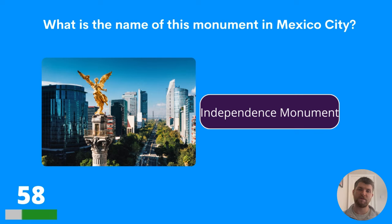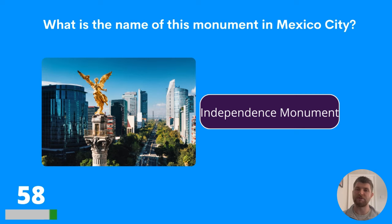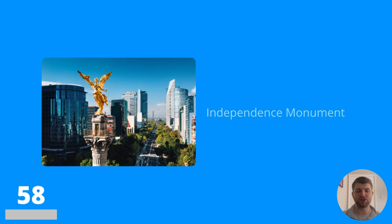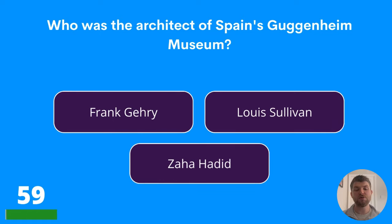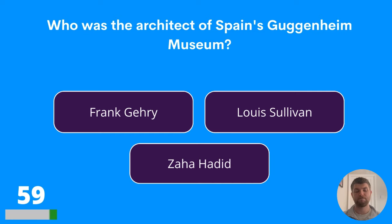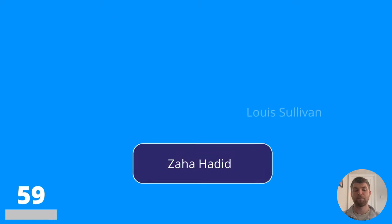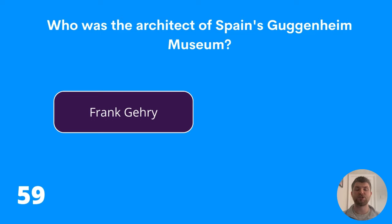I hope you're keeping up with this quiz so far — we're coming towards the end of this section. Question fifty-nine: who is the architect of Spain's Guggenheim Museum? Is it Frank Gehry, Louis Sullivan, or Zaha Hadid? The answer is Frank Gehry.